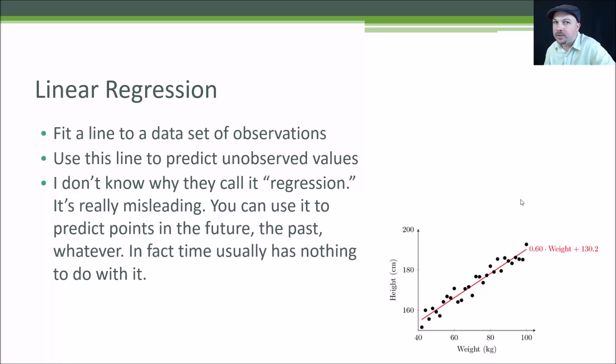In this example, I might end up with a slope of 0.6 and a y-intercept of 130.2. That defines a straight line given a slope and a y-intercept that fits the data I have best, and I can use that line to predict new values. The weights I observed only went up to 100 kilograms, but I could use that line to figure out the height for someone with 120 kilograms based on all this previous data.